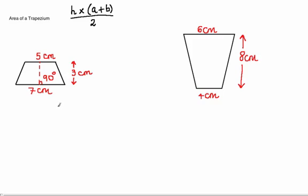Finding the area of a trapezium. The formula for finding the area of a trapezium is the perpendicular height multiplied by the sum of the pair of parallel lines, then you divide by 2.